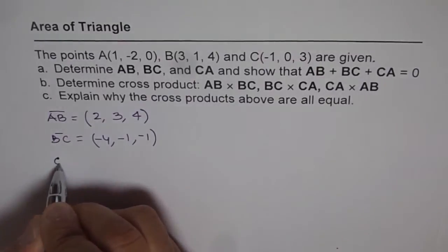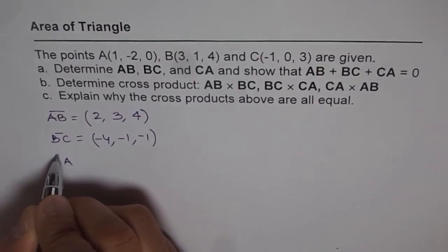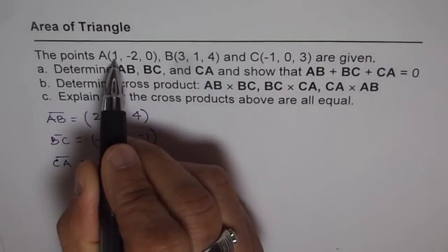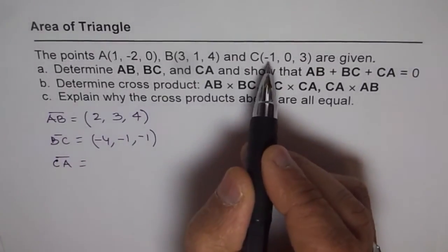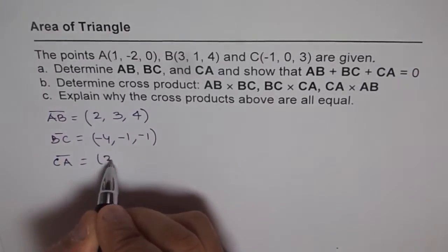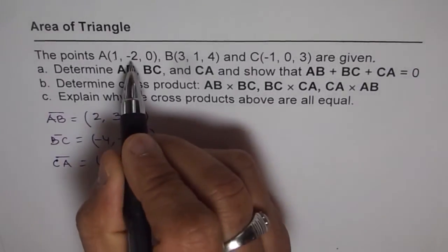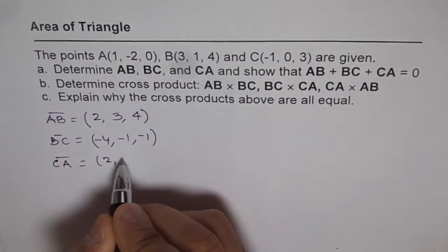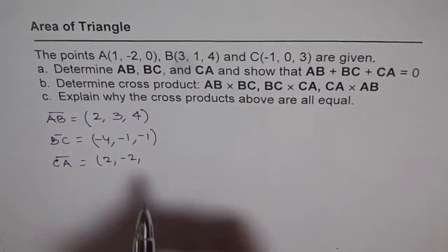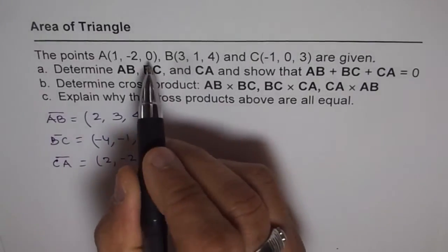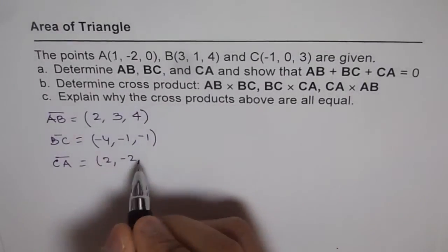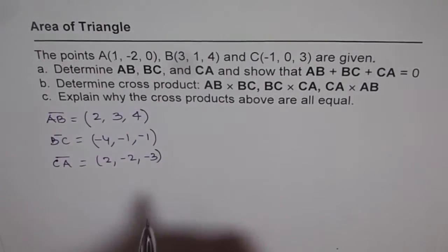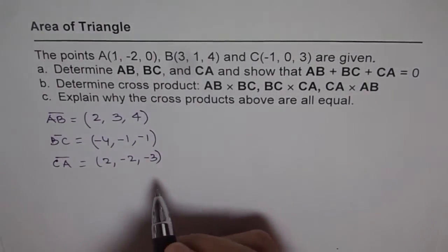For BC: -1 minus 3 is -4, 0 minus 1 is -1, and 3 minus 4 is -1. And now CA: 1 minus (-1) is 2, -2 minus 0 is -2, and 0 minus 3 gives us -3. So we have AB = (2, 3, 4), BC = (-4, -1, -1), and CA = (2, -2, -3).